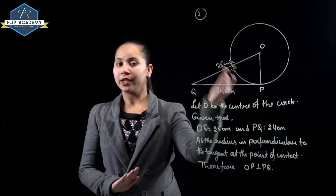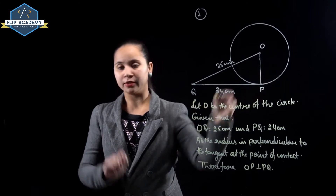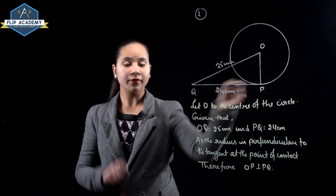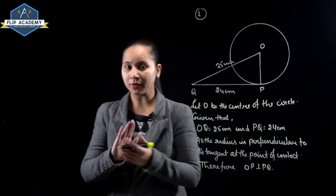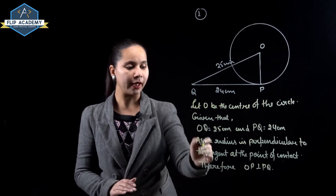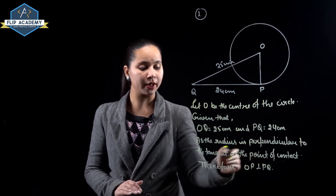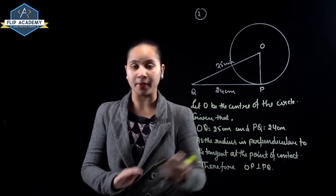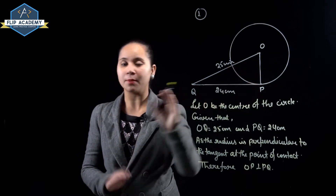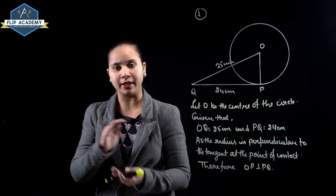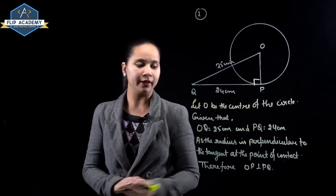Let's look at the figure. O is the center of this circle and OP is the radius. It is given that OQ is equal to 25 cm and PQ is equal to 24 cm. Since the radius is perpendicular to the tangent at the point of contact, OP is perpendicular to PQ, meaning this angle is equal to 90 degrees.